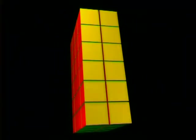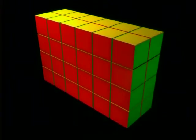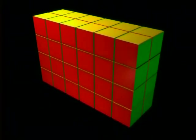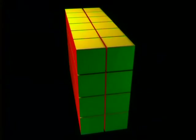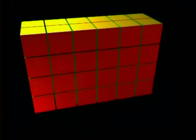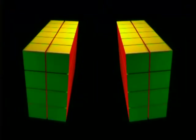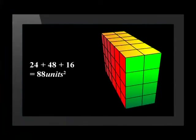We get 12 on the top and the bottom, 24 here and here, and 8 on each end. That's 24 and 48 and 16, which comes to 88 square units. 88 is 4 times as much as 22.